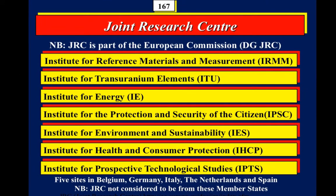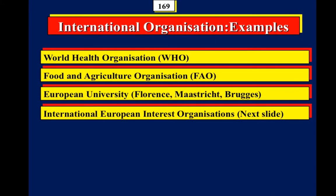The Joint Research Centre is made up of seven institutes located in Belgium (Geel), Germany (Karlsruhe), Italy (Ispra), the Netherlands (Petten), and Spain (Seville). They can participate in projects and receive funding like any other partner.